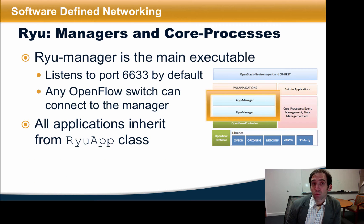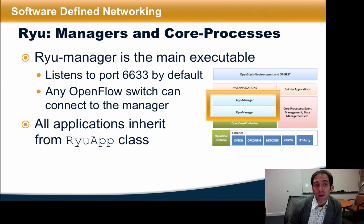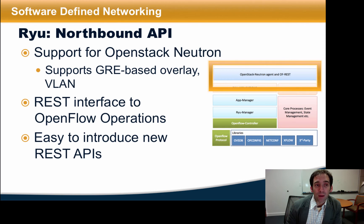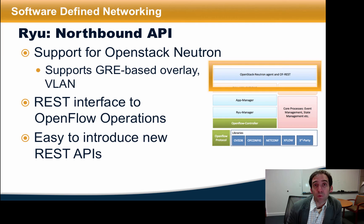The Ryu manager, which we'll look at in a minute, is the main executable. It listens to port 6633 by default, and any OpenFlow switch can connect to the manager, whether it's software or hardware. All control applications inherit from the Ryu app class. The Ryu northbound API provides support for OpenStack Neutron, as well as GRE-based overlays and VLANs. It also provides a generic REST interface for performing OpenFlow operations, and makes it easy to introduce new REST APIs.